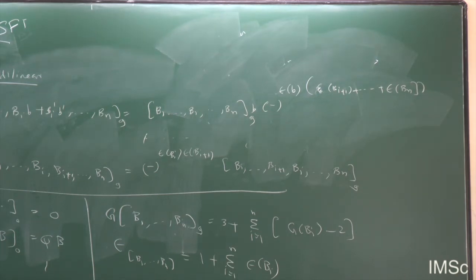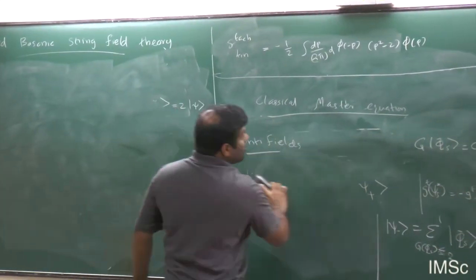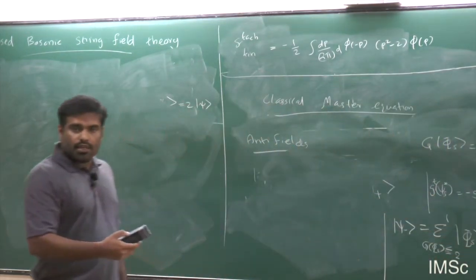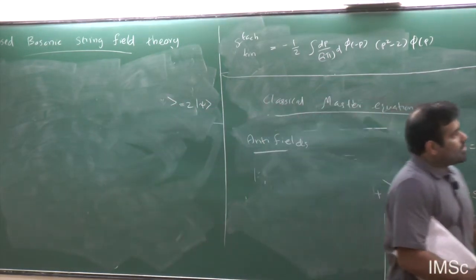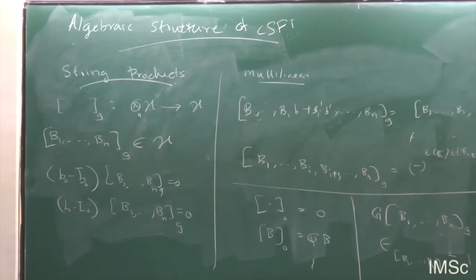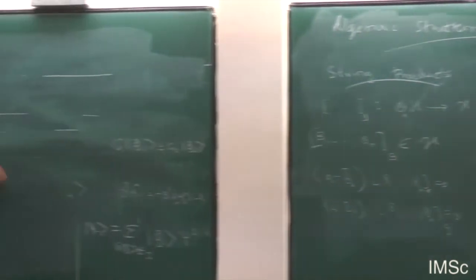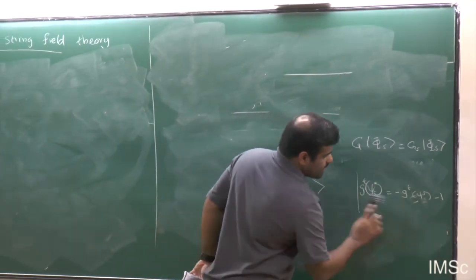The Grassmann parity of a string product is given by the sum of the parities of all the B_i fields plus 1. The most important feature of the string product is that it satisfies a very important identity — the fundamental identity. This identity says that a certain sum equals zero: Q of the string product plus a summation of string products with a BRST insertion in each slot, plus terms involving compositions of string products from Riemann surfaces of lower genus.